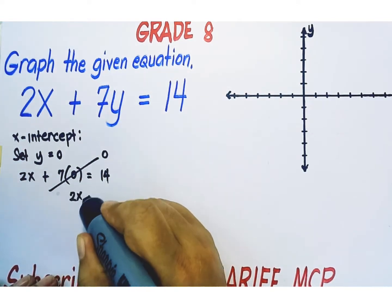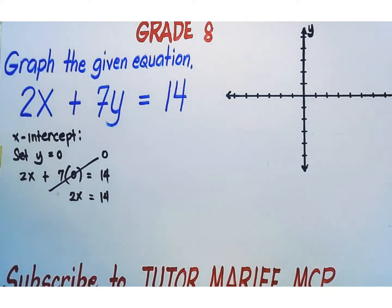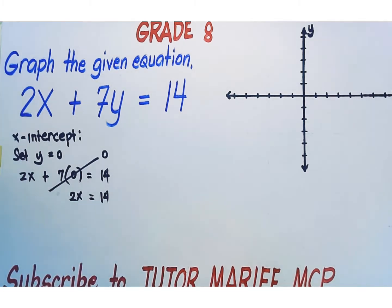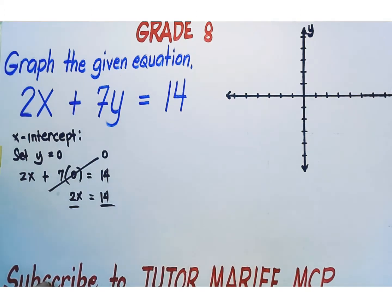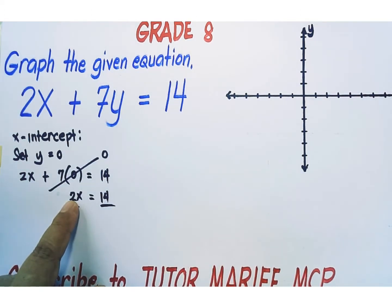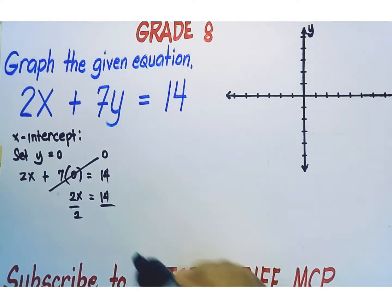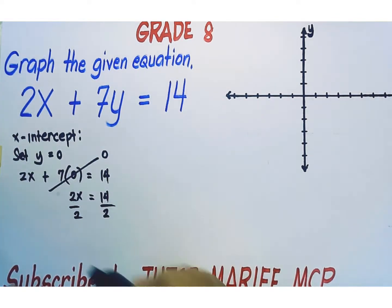The left side becomes 2x and the right side is 14. Let's isolate x — use the division property of equality and divide both sides of the equation by the numerical coefficient of x: left side divided by 2, right side divided by 2.